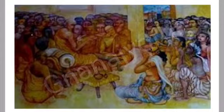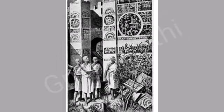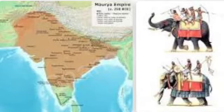The supreme power was held by the king, who was advised by a council of ministers called the Mantri Parishad. The empire was divided into provinces, which were further divided into Nagaras or towns and Gramas or villages. The capital city was Pataliputra. There was an elaborate spy system, and the Mauryan kings had a large standing army including infantry, cavalry, chariots, and a navy.